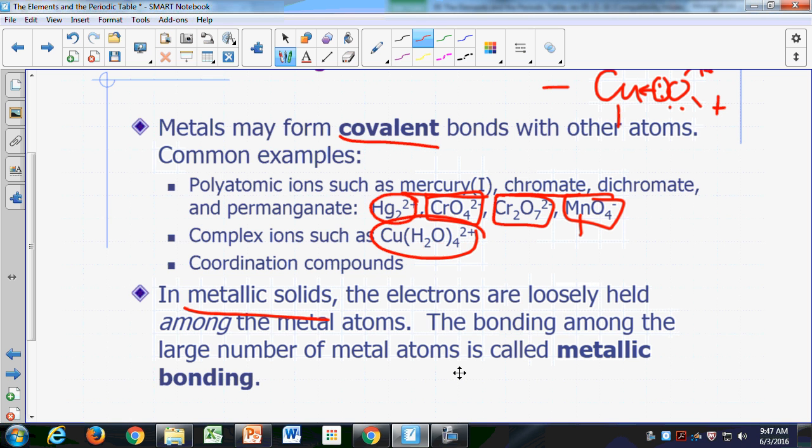Electrons are readily able to move. So what's holding those metals together would be what you would call metallic bonding. That's the bonding that occurs when you have a large number of metal atoms with electrons just loosely held among them.